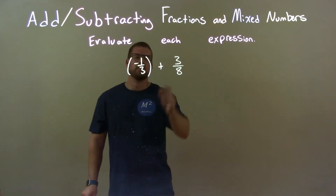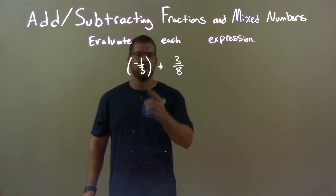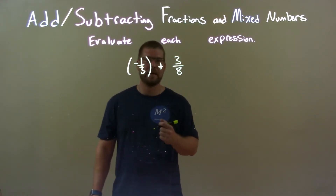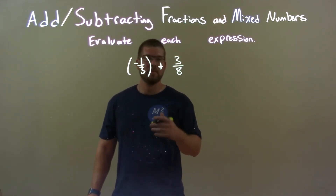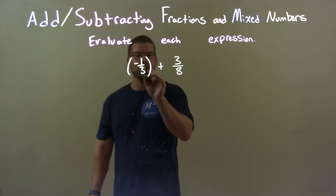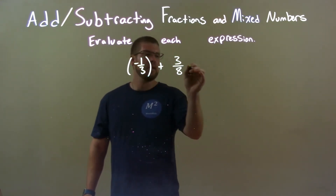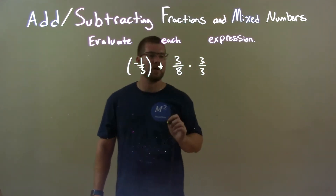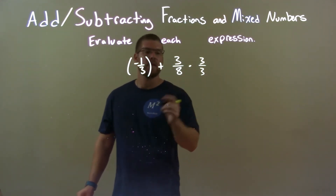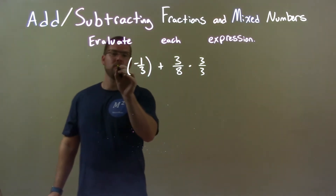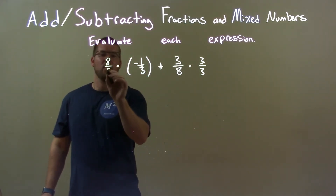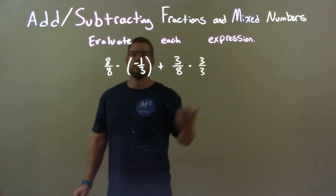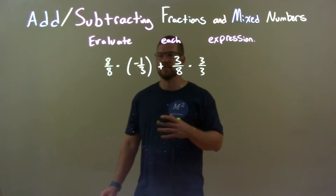We have negative one-third plus three-eighths. The first thing you should see here is that these do not have the same base, so we can't add them directly right now. But we can make them have the same base. My technique is to take the denominator of the first number and multiply it over itself onto the second number, then take the second denominator, which is eight, and multiply the first number by that number over itself. A number divided by itself is the same as one, so we don't change the problem at all, just the way it looks.